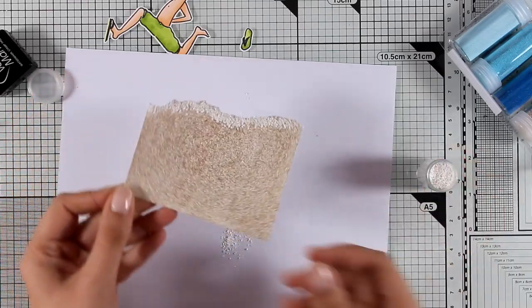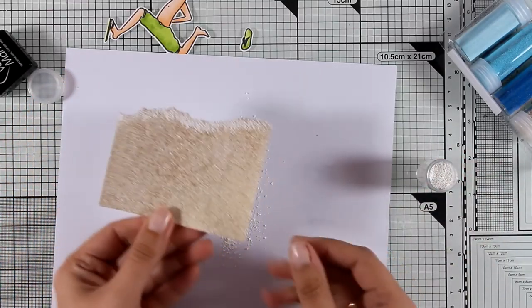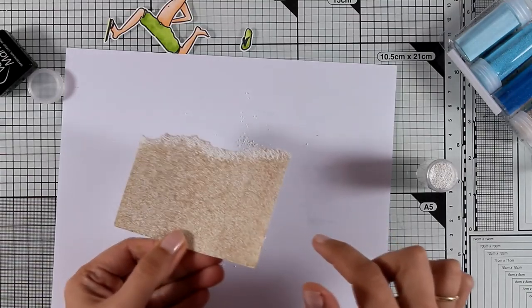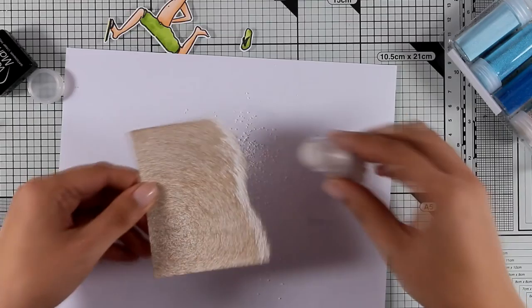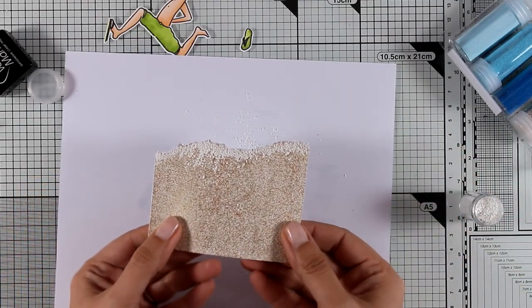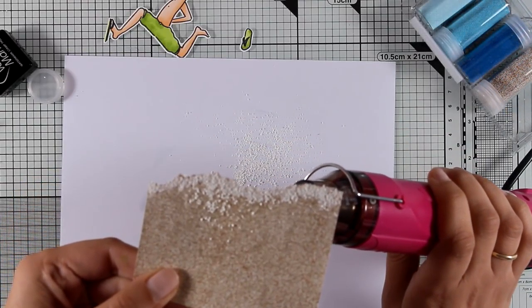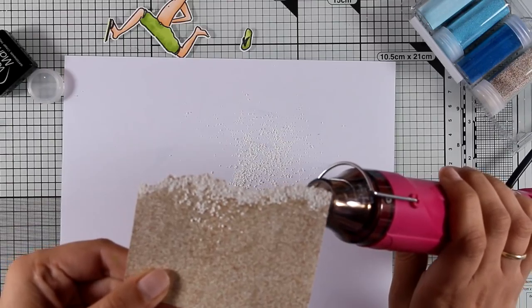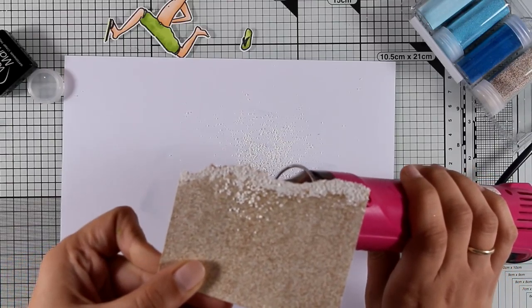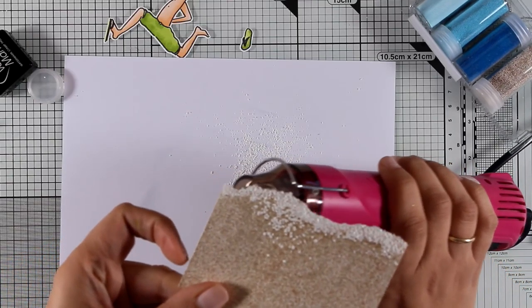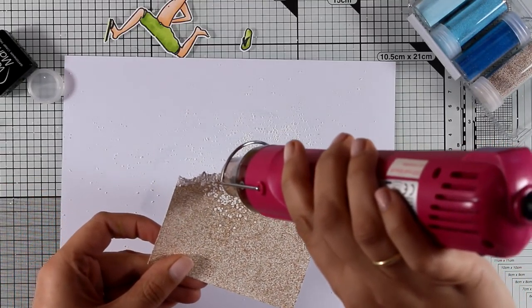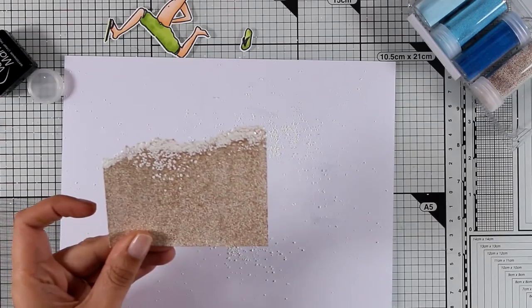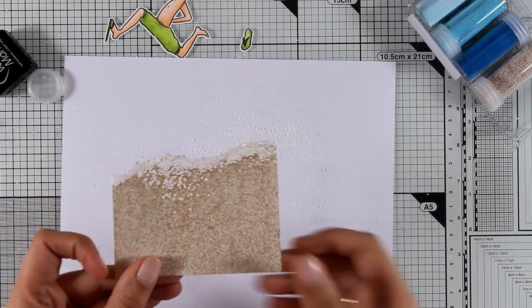Don't tap too much otherwise everything is going to fall - this is quite heavy, it's not fine grained. Once I'm happy with the amount of powder I have on top, I can use my heat gun to melt everything. As I'm applying heat from underneath, the embossing powder is going to melt and stick nicely on top of my paper. Then I can also give it a quick heat on top if you want to.